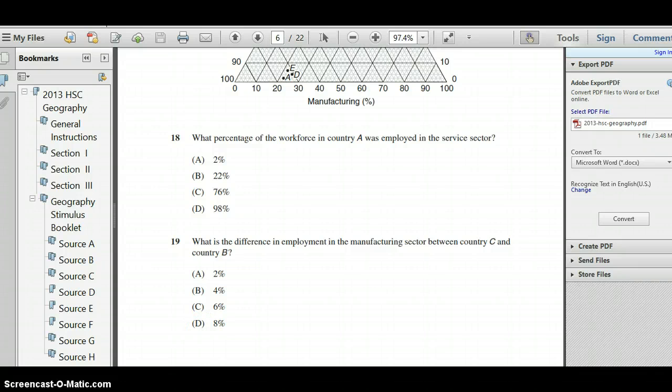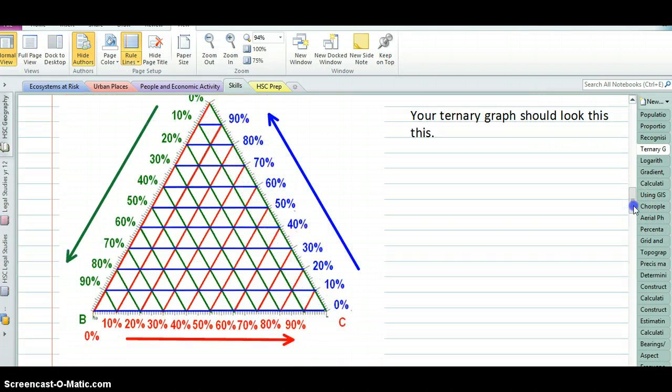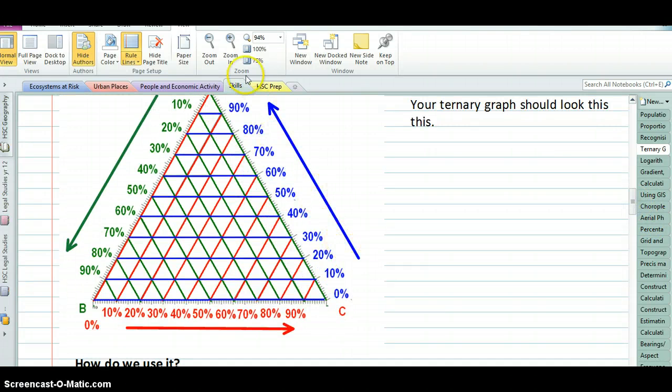That is ternary graphs. Essentially, just recapping, if you keep in mind that your axes always need to be read in an anti-clockwise direction, your A running up this way, which will give your lines running along here, your B running down here, which gives you your lines running down in this direction, and finally, your C axis running this way, moving up in this direction, you should have no problems interpreting ternary graphs.